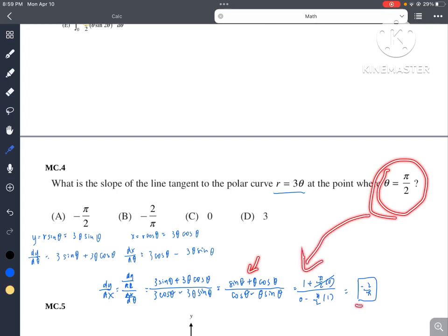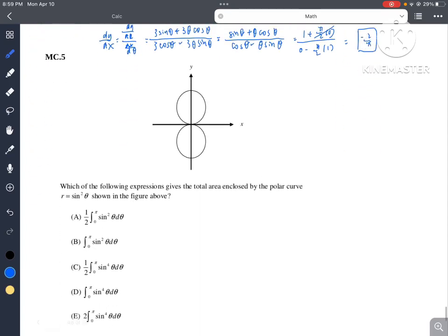So we just plug in pi over 2 to this one, and we find out that the answer will be b negative 2 over pi.